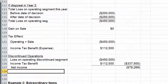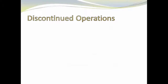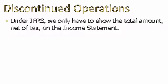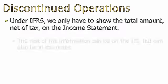Let's take a look at IFRS for discontinued operations. There's not a lot of differences between US GAAP and IFRS. Under US GAAP, we have to show how much we made or lost running the operation, how much we made or lost selling it, and then the tax effect. Under IFRS, we only have to show the net amount on the income statement — or as they call it, a statement of profit and loss. We do have to include the other information somewhere, just not necessarily on the income statement; you can disclose it in a footnote. So a little bit different in that they give you some flexibility with where you put that information.